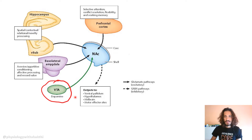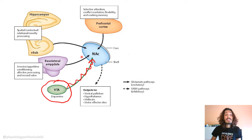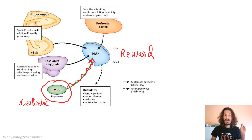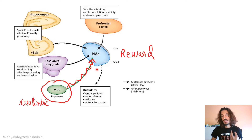Nucleus accumbens is connected to your ventral tegmental area. That is where your dopamine is released and reaches the nucleus accumbens. This whole system plays a role in the reward circuitry because of its close association with surrounding structures. This is your mesolimbic pathway — from the ventral tegmental area to nucleus accumbens. There are also mesocortical pathways, connecting to your amygdala, hippocampus, and prefrontal cortex, affecting motivation, decision making, and reward processing.